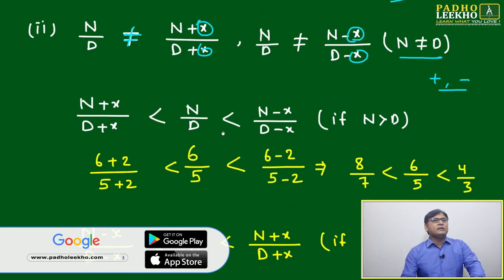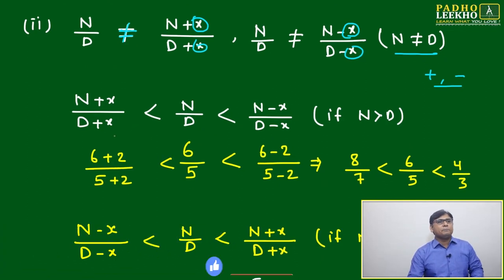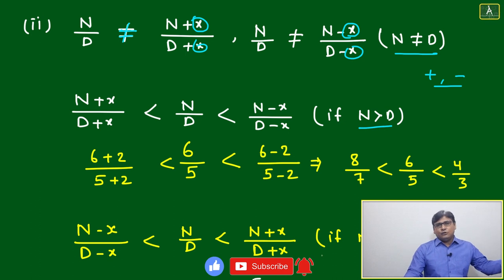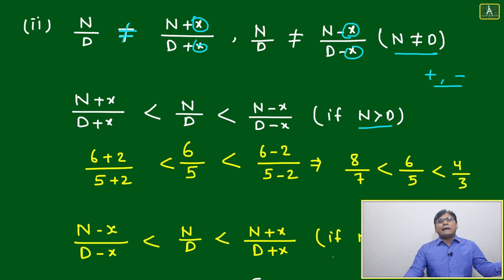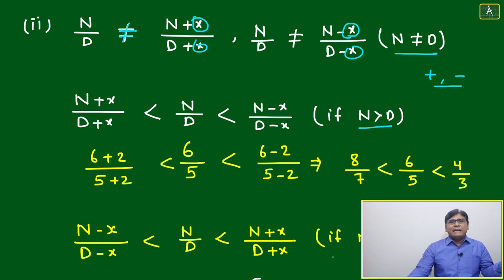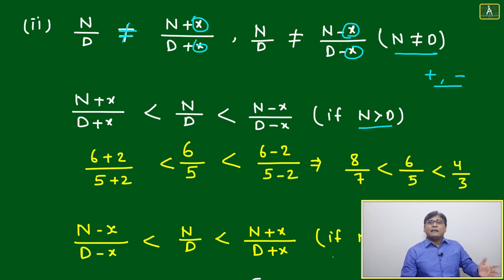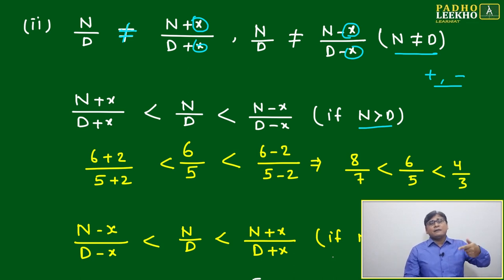Let's take a broader view of what's happening here. A fraction always has numerator less than denominator, meaning its value is less than one. But a ratio can be more than one or less than one. So every fraction is a ratio, but every ratio is not a fraction, because a ratio can be greater than one.